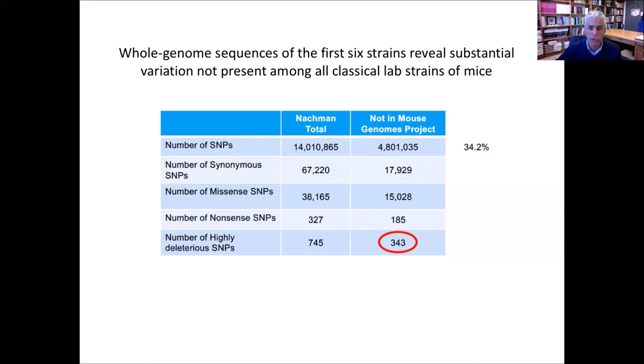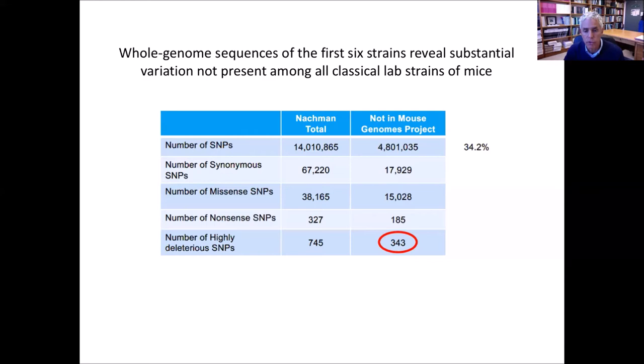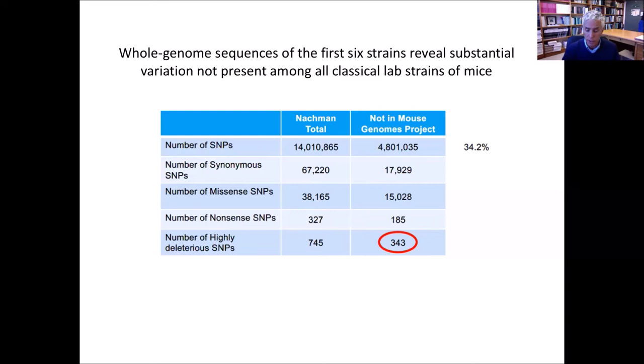We're now working on a resource paper where we're sequencing the complete genomes of all of these strains. Just from the first six strains, we see 14 million SNPs, and of those 14 million, 4.8 million SNPs are not present in any of the mouse genomes sequenced so far. These strains capture a very large proportion of variation not present among existing strains. If we just look at highly deleterious SNPs, there's an even higher proportion not captured among existing strains, so we think these will be good models for a lot of human diseases.